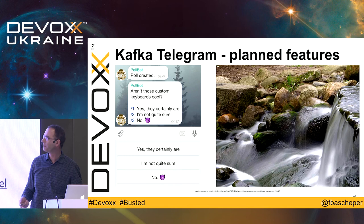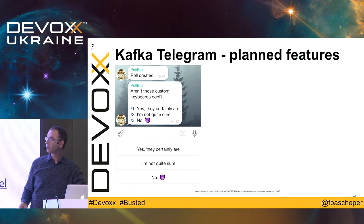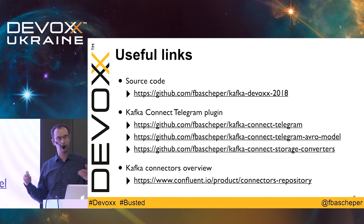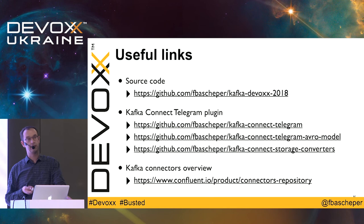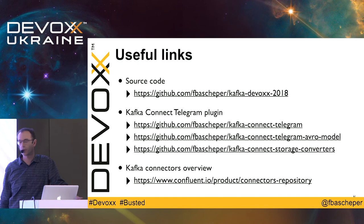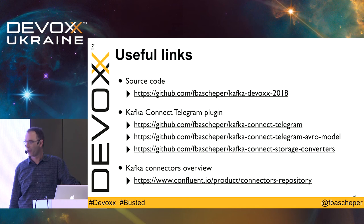Here are the links you can use: the demonstration source code on GitHub, the plugin information and a link to the Telegram connector on the Confluent Connect Hub, with a README explaining how to use it, how to connect to your Telegram chat, and how to add your bot. If you have questions, feature requests, or bug reports, please use GitHub. There are also many connectors still only listed on the original Kafka connectors page and not yet on the Connect Hub.